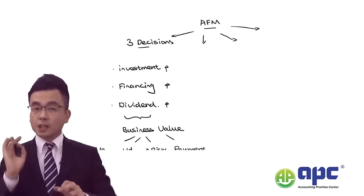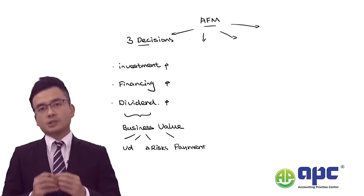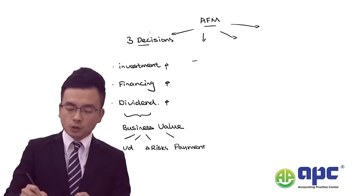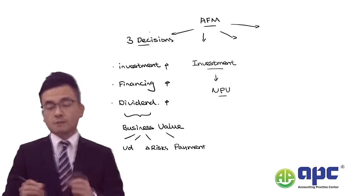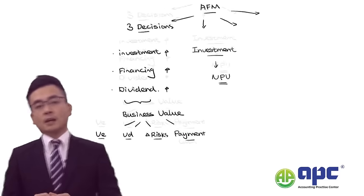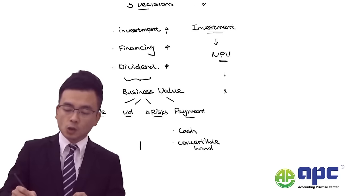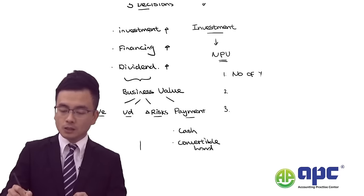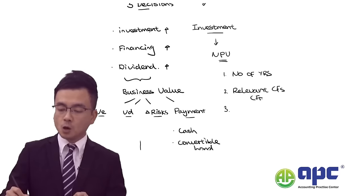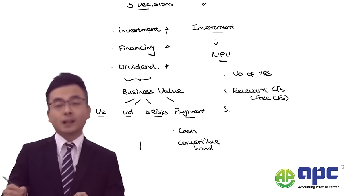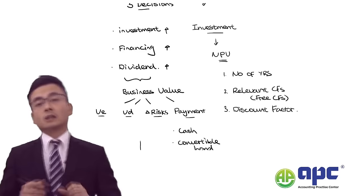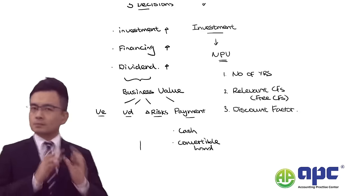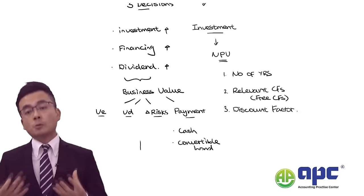The majority part of the syllabus focuses on the investment decision — particularly the net present value (NPV) analysis based on future cash flows. To perform NPV analysis we need three factors: the number of years into the future, the relevant cash flows (interpreted as free cash flows to firm), and an appropriate discount factor.